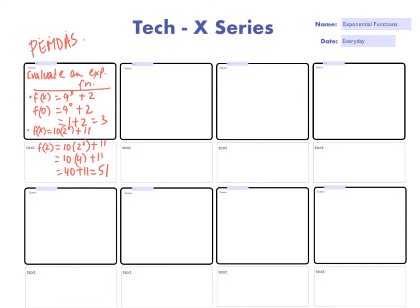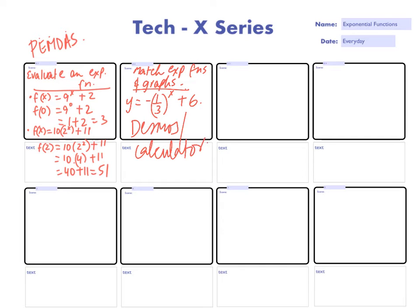So the second exercise is just matching the graphs, functions and graphs. So let's say they give you a graph like y is equal to negative one-third exponent x plus 6. So you can use Desmos or your calculator and see the shape.